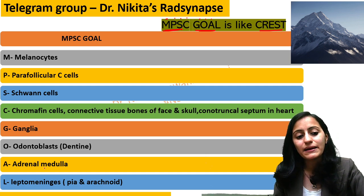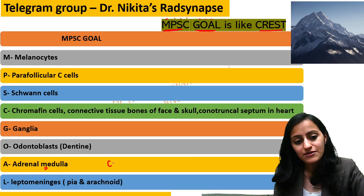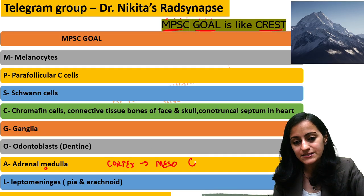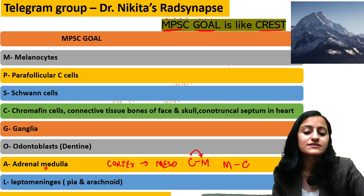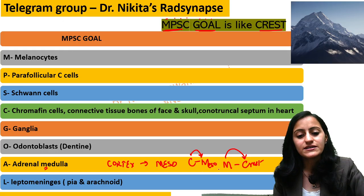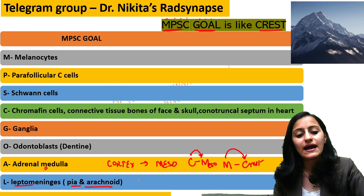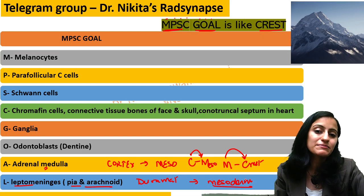An important distinction: adrenal medulla is from the neural crest cell, but adrenal cortex is from mesoderm. The trick to remember this is C is for M and M is for C — cortex from mesoderm, medulla from crest. Also, leptomeninges means only pia and arachnoid — not the dura mater. Dura mater develops from the mesoderm.